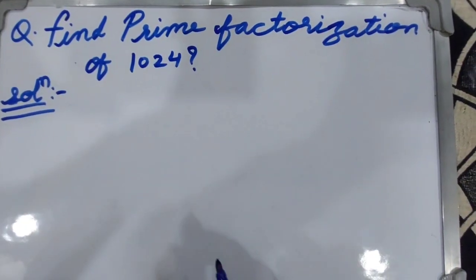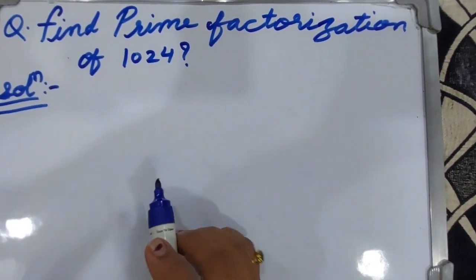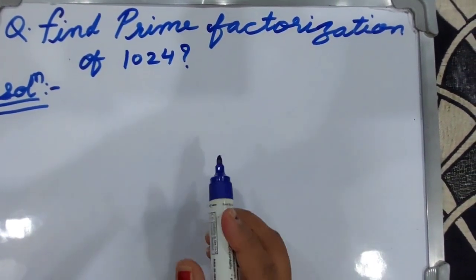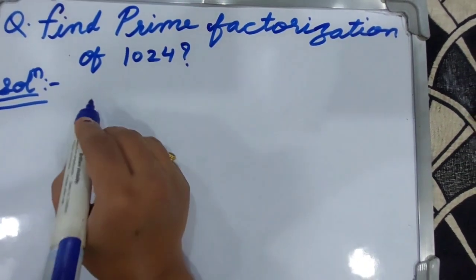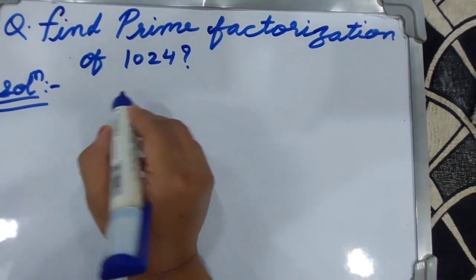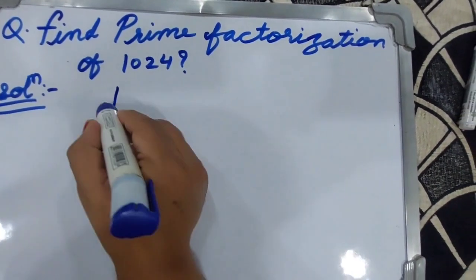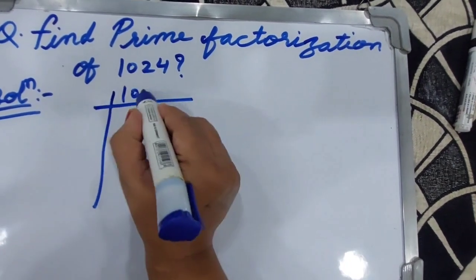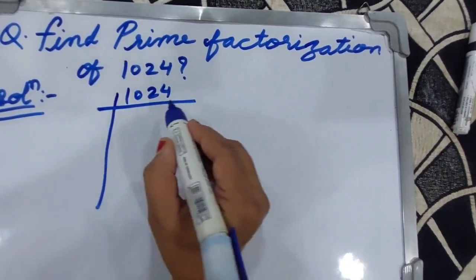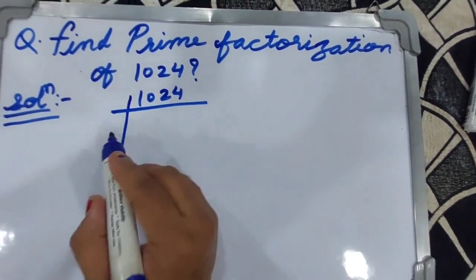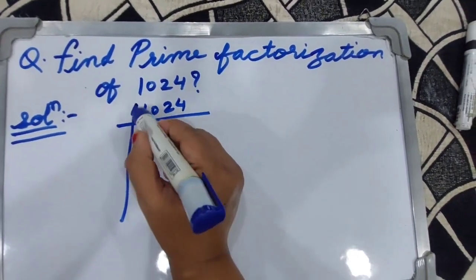Hello everyone, welcome to my YouTube channel. Today we solve the question: find the prime factorization of 1024. First we can write the number 1024 and find its prime factorization.